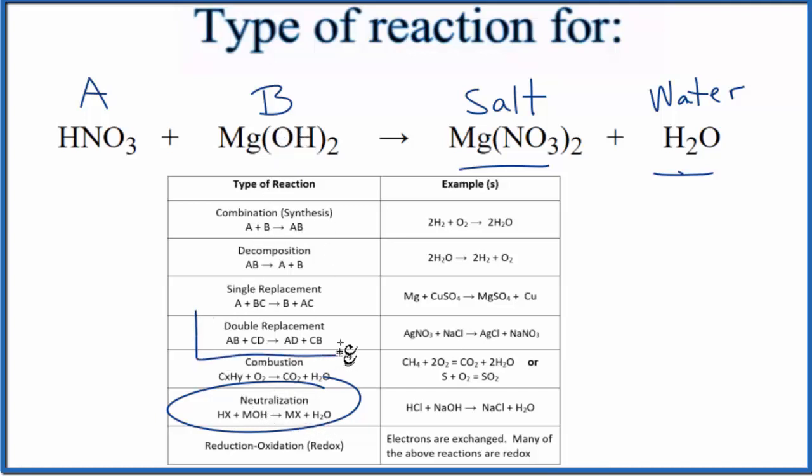It's also, though, a double replacement. Sometimes called double displacement. That's because the Mg and the hydrogen, they're changing places. So the Mg goes with the NO3. We have Mg(NO3)2, magnesium nitrate. And then OH and the H, they go together. HOH, that's H2O.